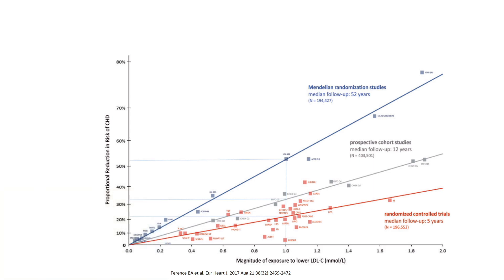Estas tablas justifican la leyenda negra de que todo el tema del colesterol es un invento de las farmacéuticas. Pues estos son todos los estudios que demuestran que cuanto más bajo tengas el colesterol, menos posibilidades hay de volver a tener un evento isquémico. ¿Por qué han ido bajando las tablas? Porque antes no había las medicaciones que hay ahora. Ahora hay medicamentos muy potentes que te permiten bajar mucho el colesterol hasta niveles antes inimaginables.